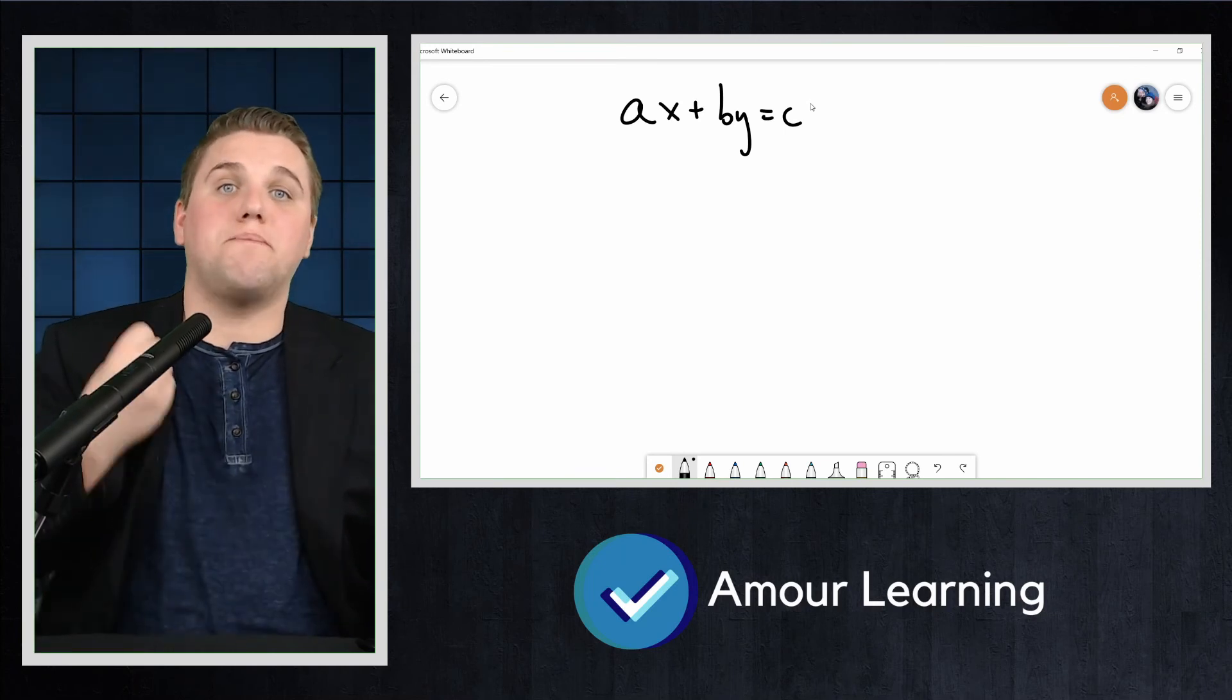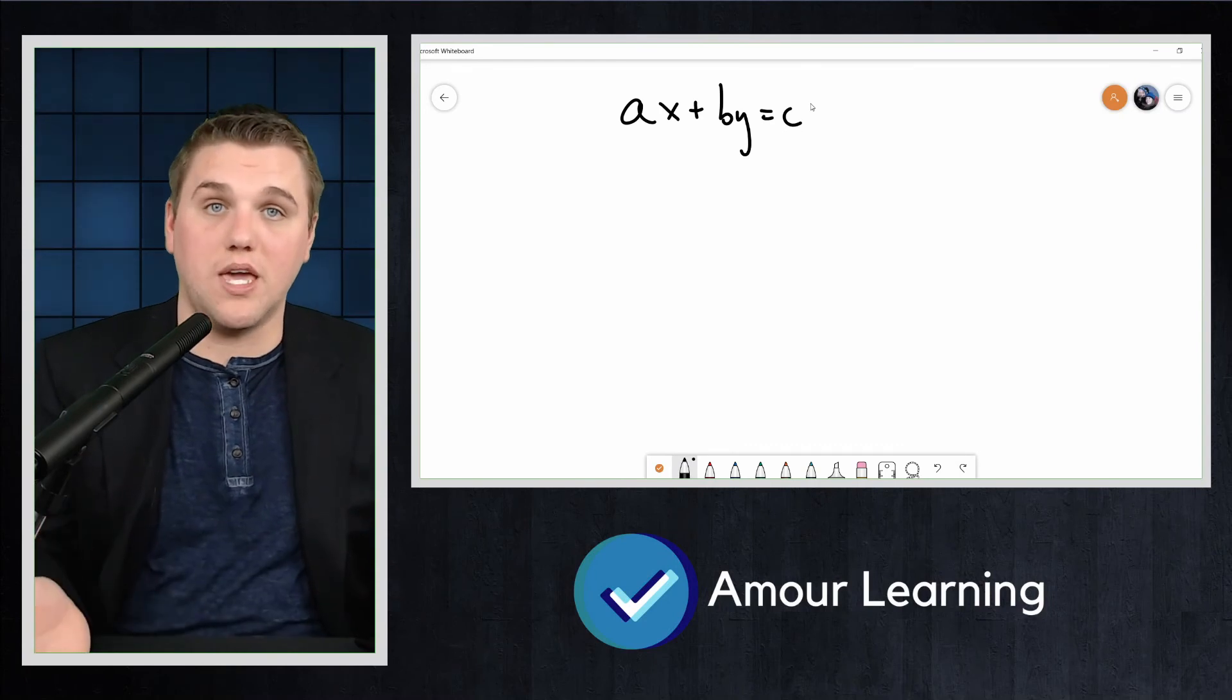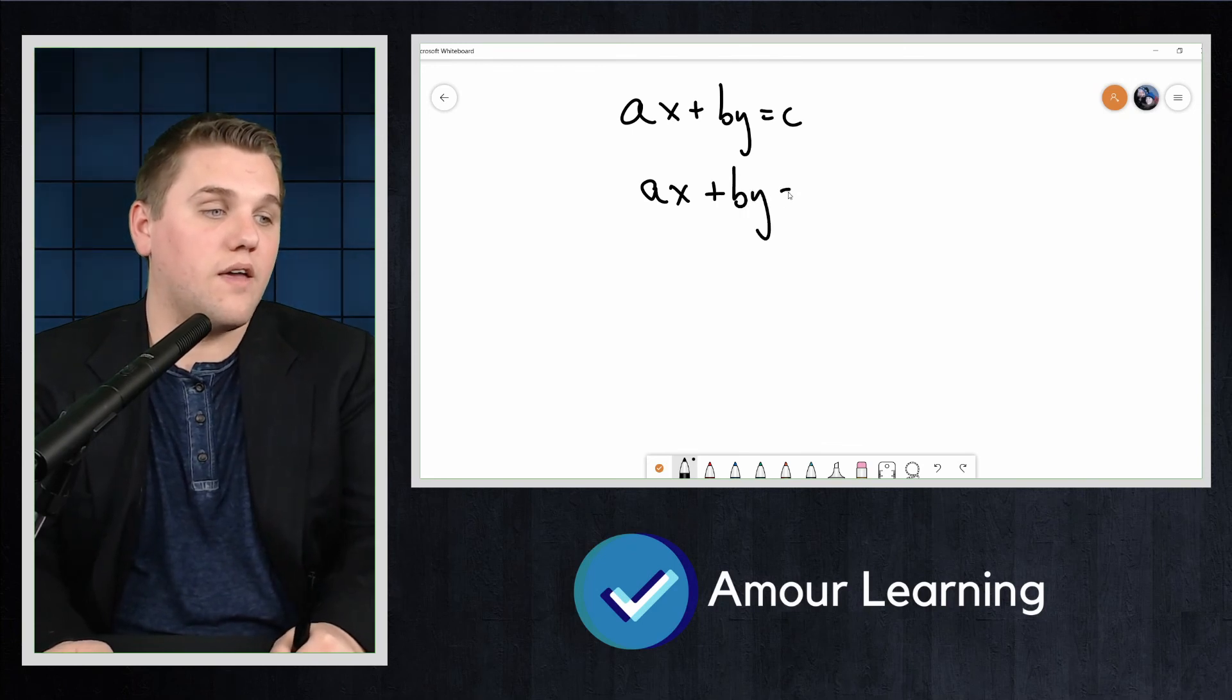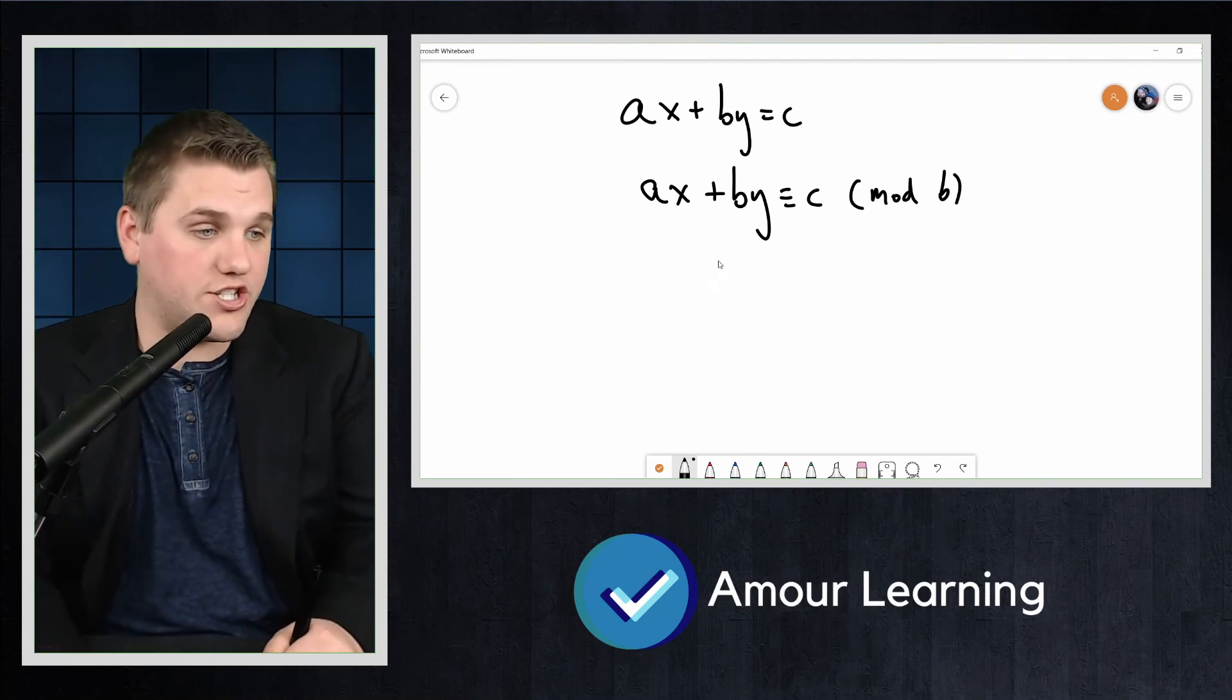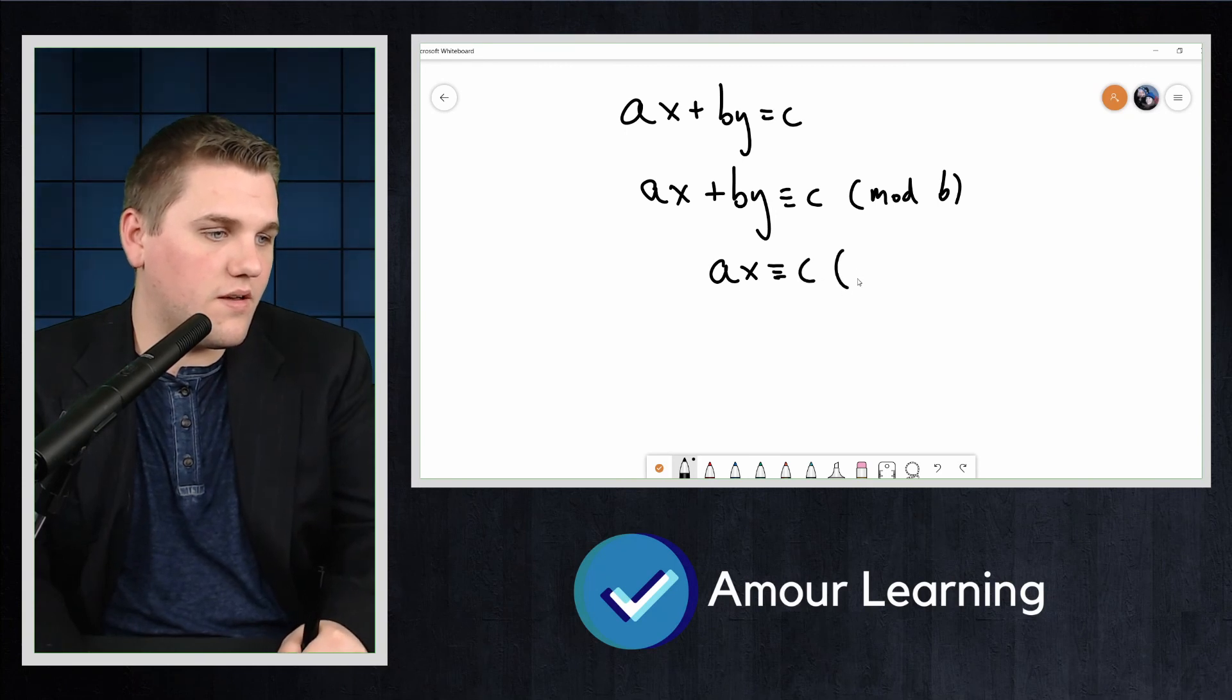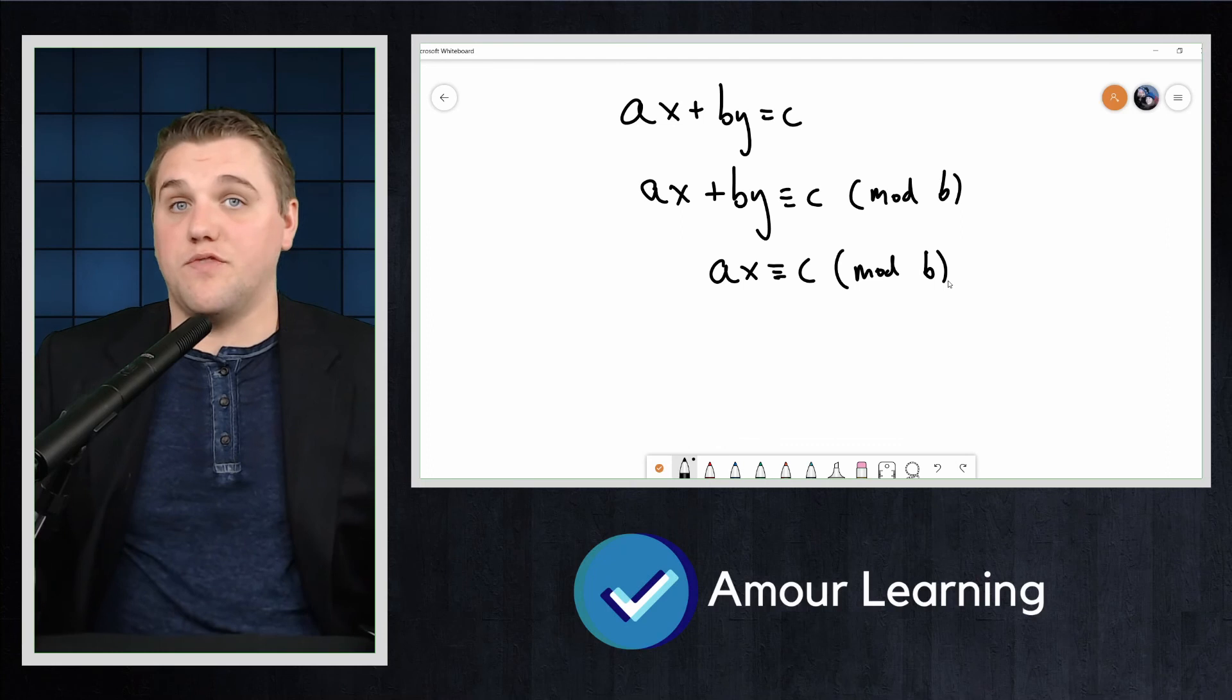The second step is to pick the smaller of a and b. Here let's assume it is b and convert to a congruence modulo b. And so we would write ax + by ≡ c (mod b). This will reduce to a congruence with one variable x, and we would just have ax ≡ c (mod b).